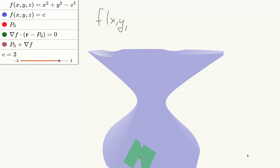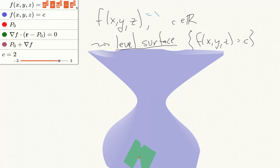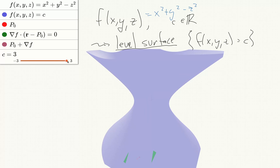If we've got a function of three variables, f of x, y, and z, and c is a number, then we can look at the level surface defined by f equals c. So here I've shown f equals x squared plus y squared minus z squared, and you can try adjusting the value of c to see different level surfaces of this function.